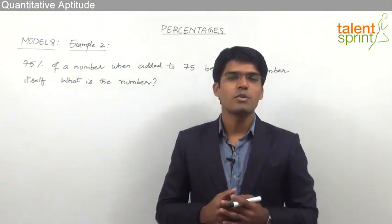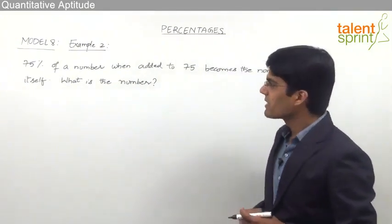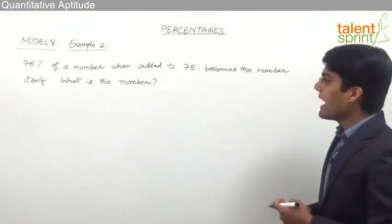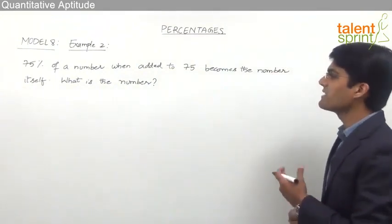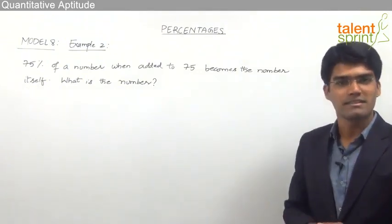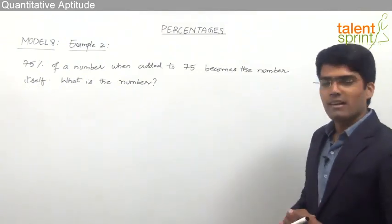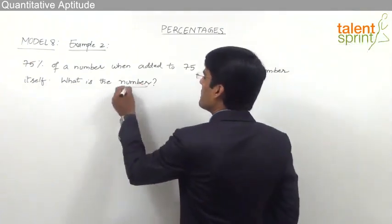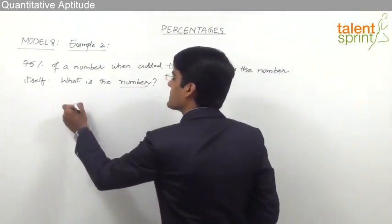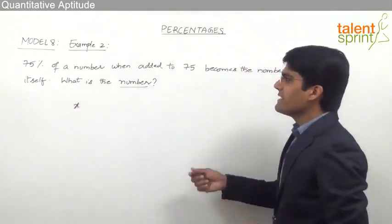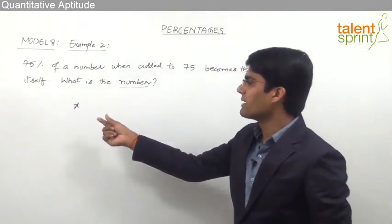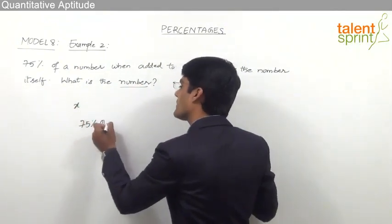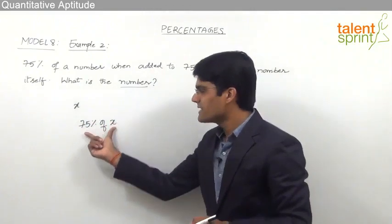Let us now take one more typical example from percentages. The question is: 75% of a number when added to 75 becomes the number itself. What is the number? This appears a little complicated but is actually a very simple question. Let us assume the number is X.